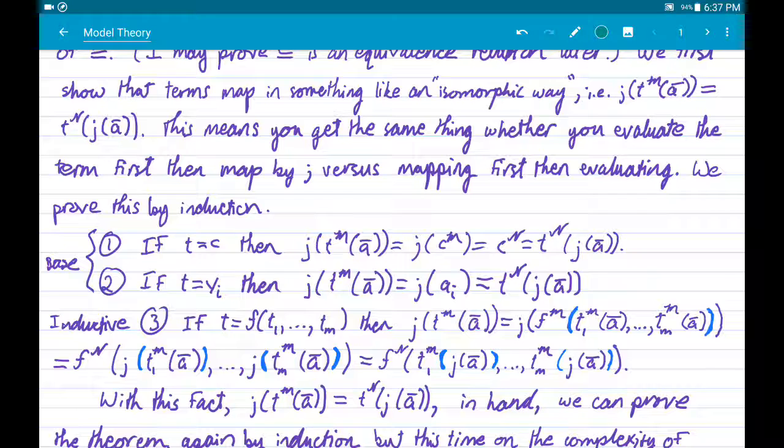But another way to see it is that you can either act first and then map, or you could map first and then act, and you get the same thing either way. That's what I mean by acting in some sense an isomorphic way on individual terms. And so, I will prove this lemma, and it will aid in the proof of the rest of the theorem.